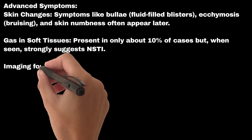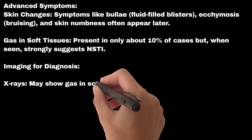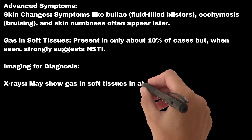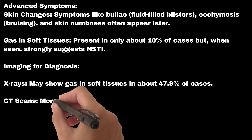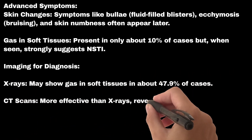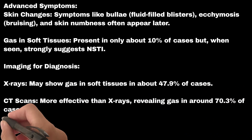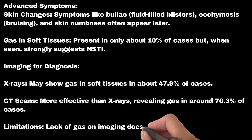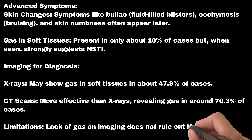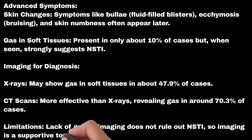Imaging for diagnosis: X-rays may show gas in soft tissues in about 47.9% of cases. CT scans are more effective than X-rays, revealing gas in around 70.3% of cases. However, lack of gas on imaging does not rule out NSTI, so imaging is a supportive tool rather than definitive.